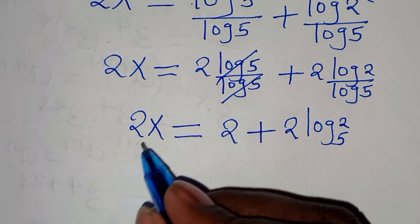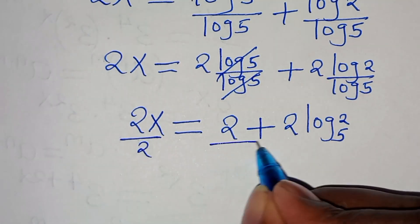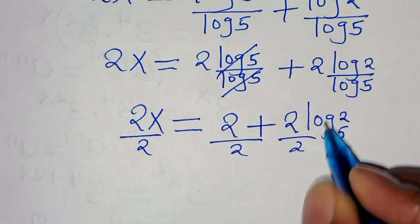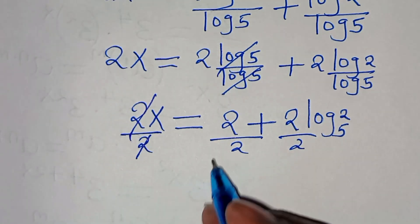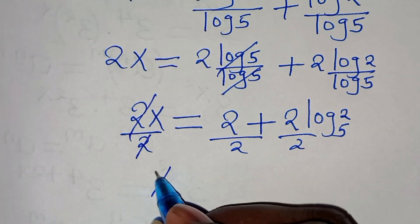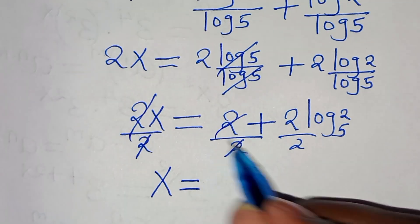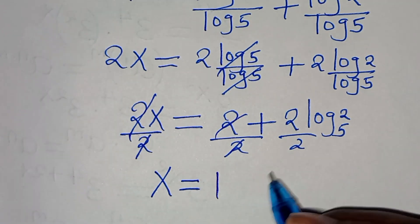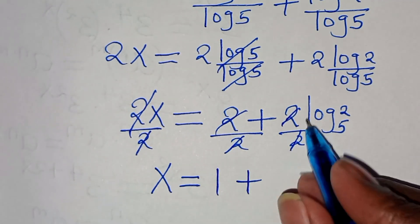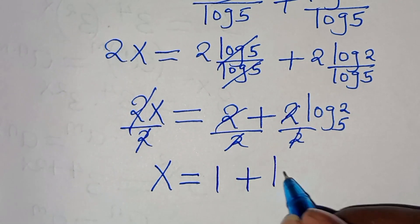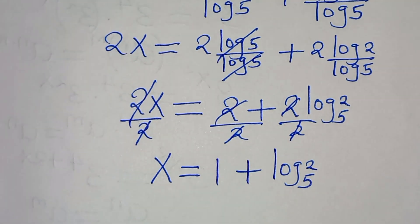Now let's divide both sides by 2, simplifying 2 and 2. This means x is equal to 1 plus log base 5 of 2.